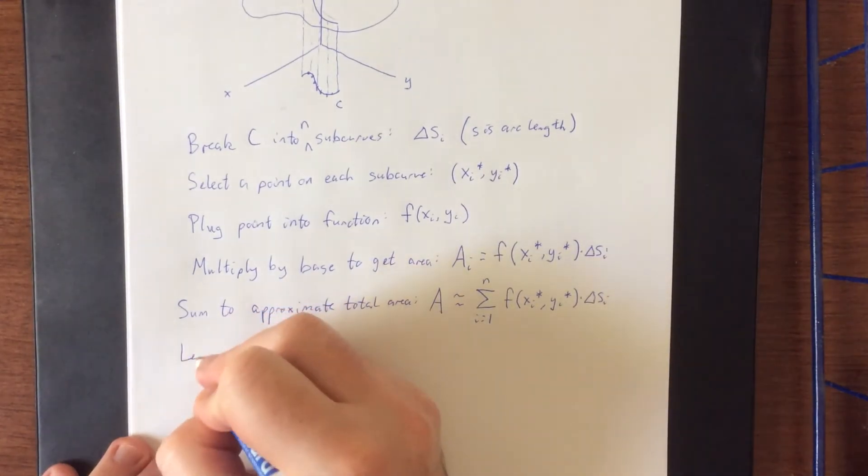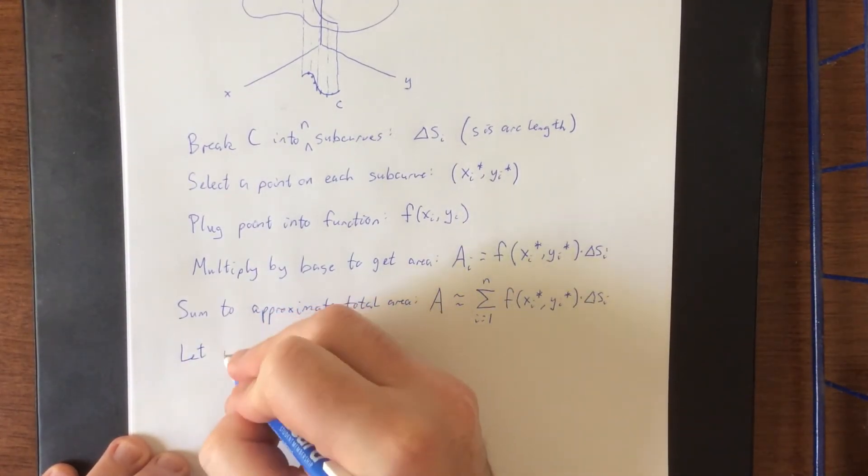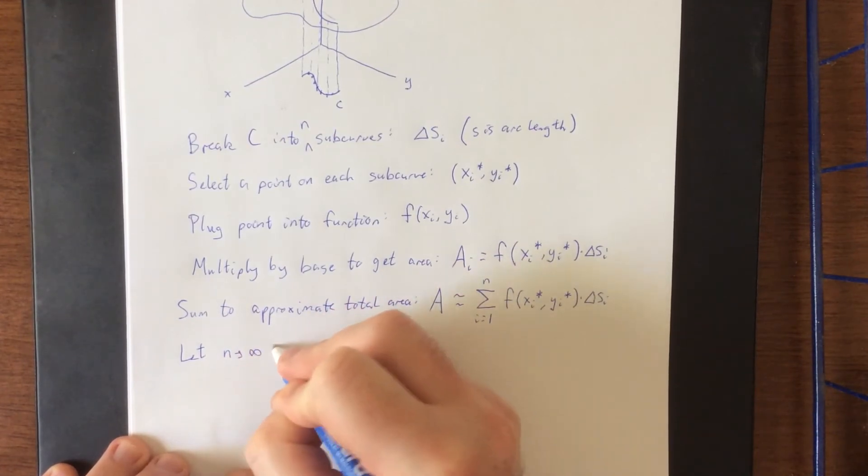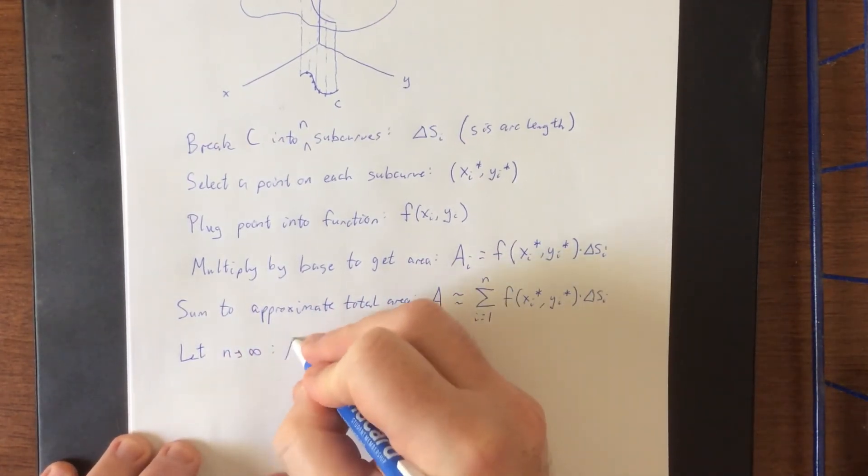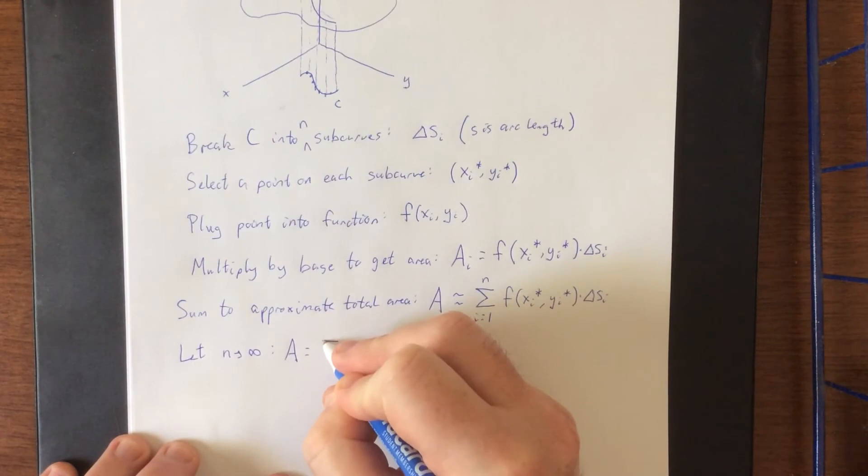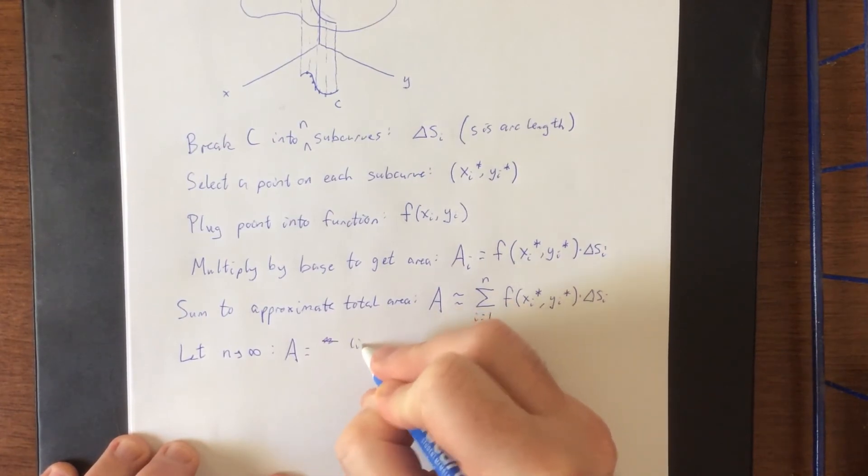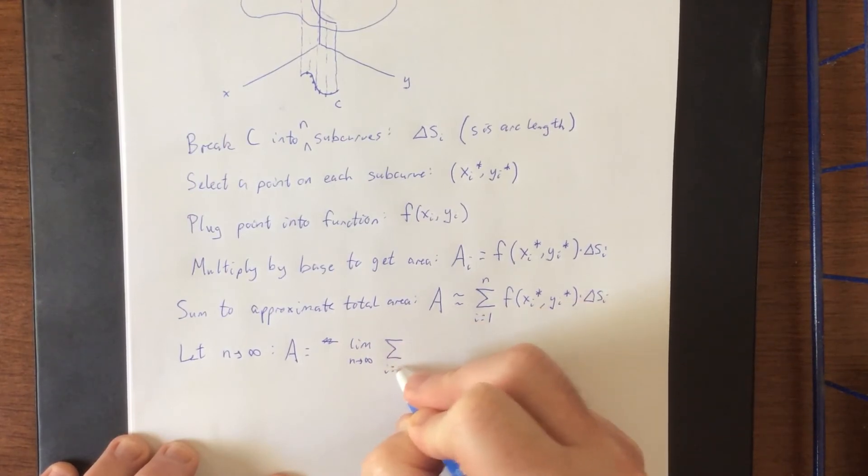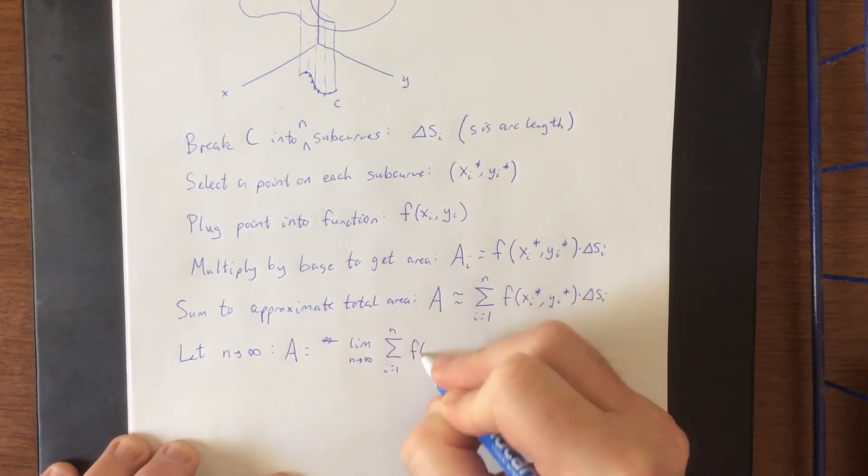Next to make the area approximation as good as possible we will allow n to go to infinity. So what we wind up with is the total area is going to be exactly equal to the limit as n goes to infinity of the sum from i equals 1 to n of f of x sub i star y sub i star times delta s sub i.